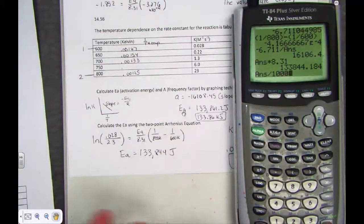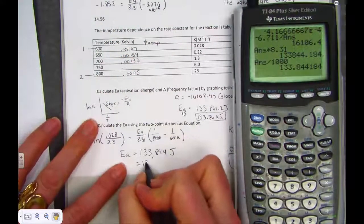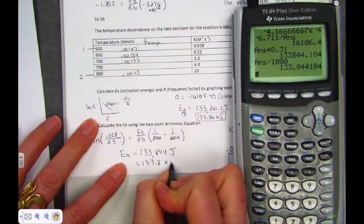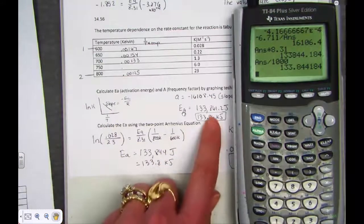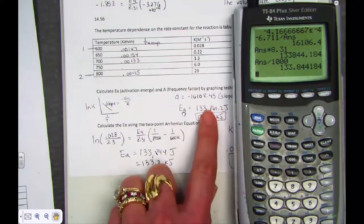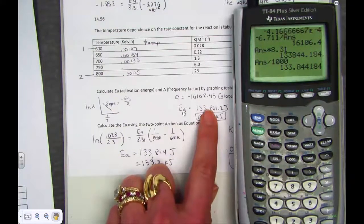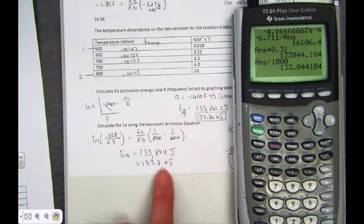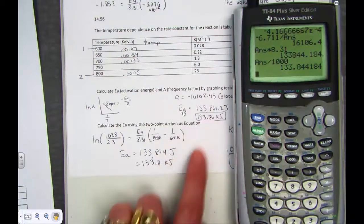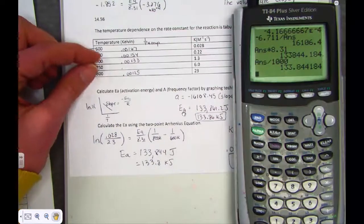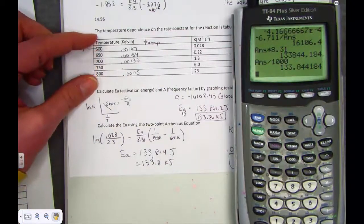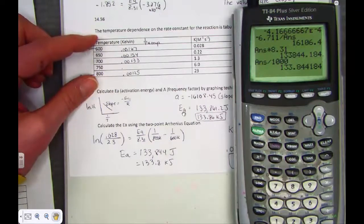Look how remarkably close we came from the slope of our line calculation, generating with lists, and the activation energy using the two-point Arrhenius equation. And this will always hold true as long as you take the points that are farthest apart from the data table, and you will indeed be calculating the slope of the line.